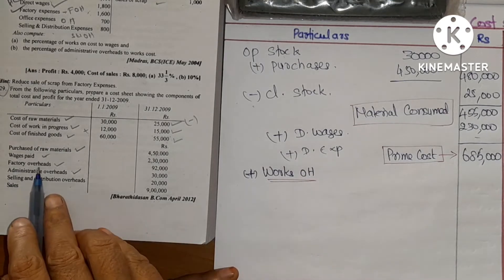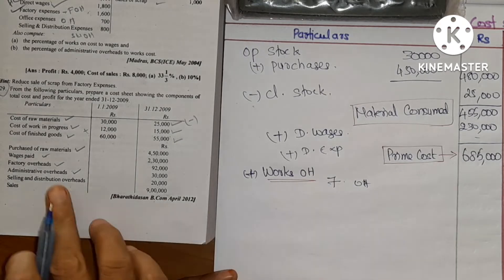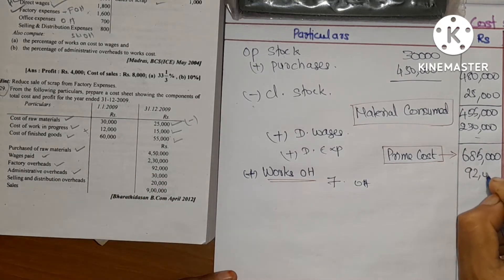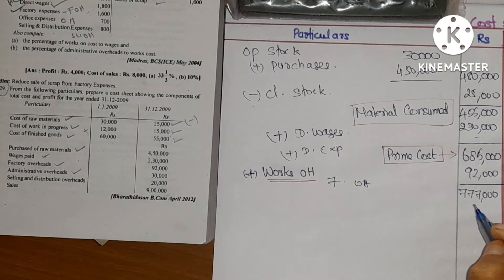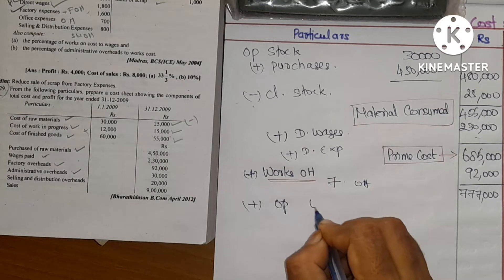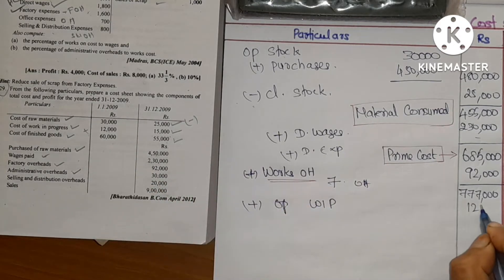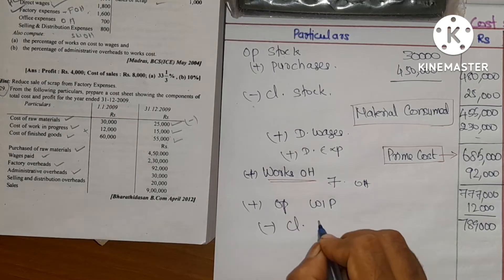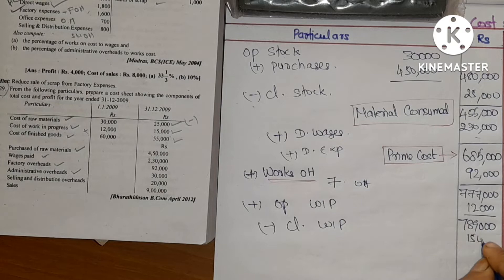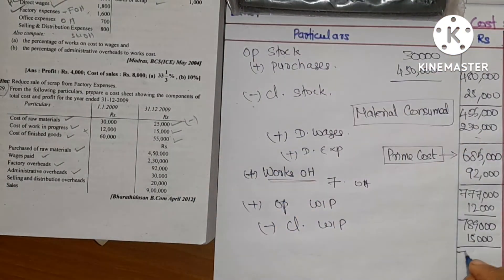We add factory overhead expenses. Factory overhead is 92,000, so plus 92,000. Opening work in progress is 12,000. Then 7,89,000 less closing work in progress of 15,000 gives us 7,74,000. This is the works cost.